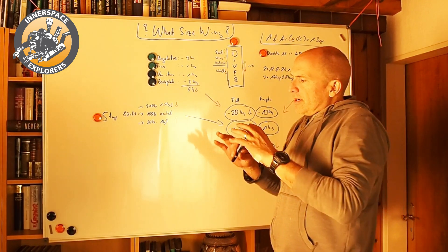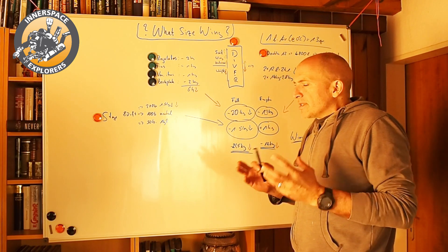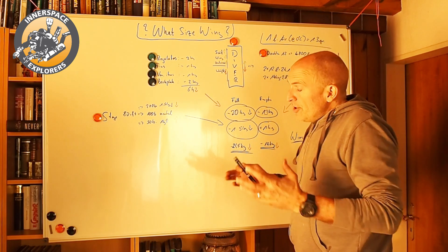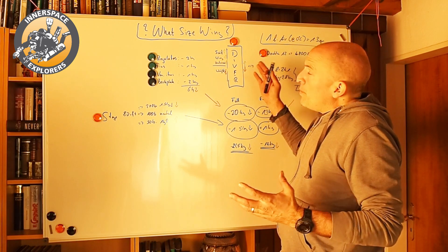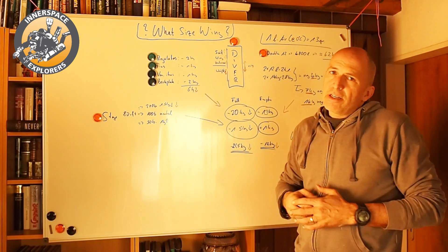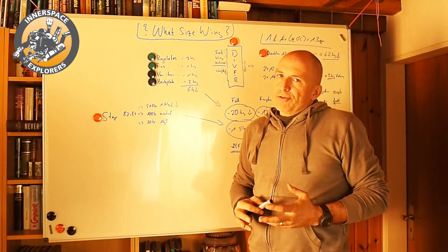So there's a couple of things we have to take into account when we consider wing size or BCD size. The first thing is we, the divers. Generally speaking, the diver is neutral. As we are basically water walking around, we are more or less neutral.